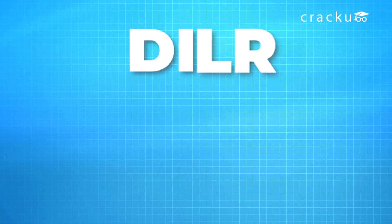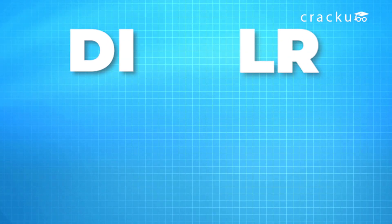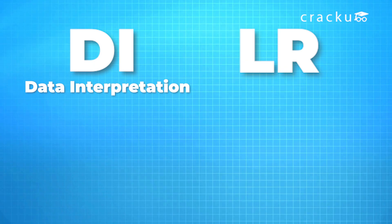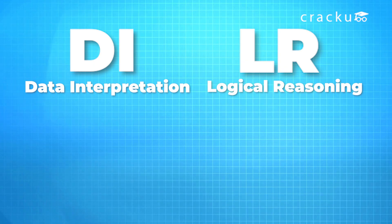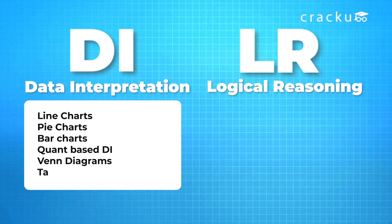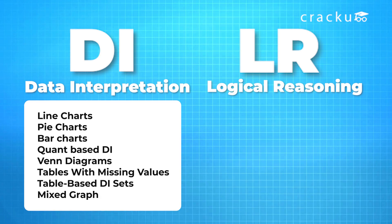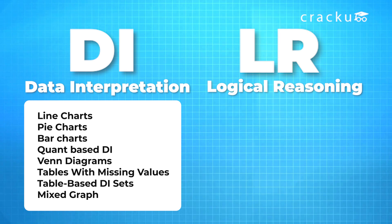But before knowing the strategy, let us first know the syllabus of DILR in CAT. The DILR section mainly consists of two parts: DI, that is Data Interpretation, and LR, that is the Logical Reasoning part. Under the DI part, we have line charts, pie charts, bar charts, quant-based DI, Venn diagrams, tables with missing values, table-based DI sets, and mixed graphs.